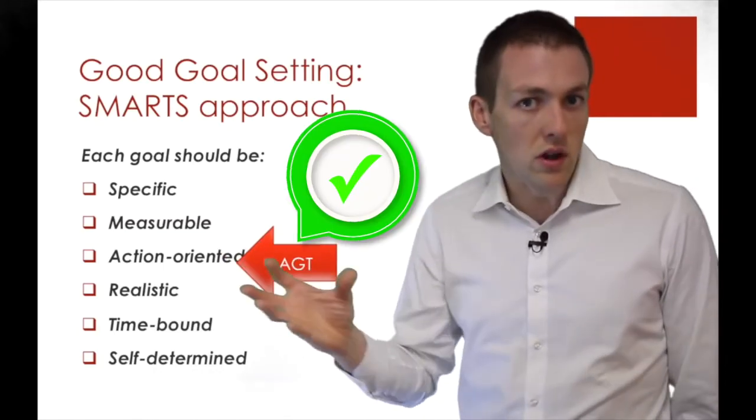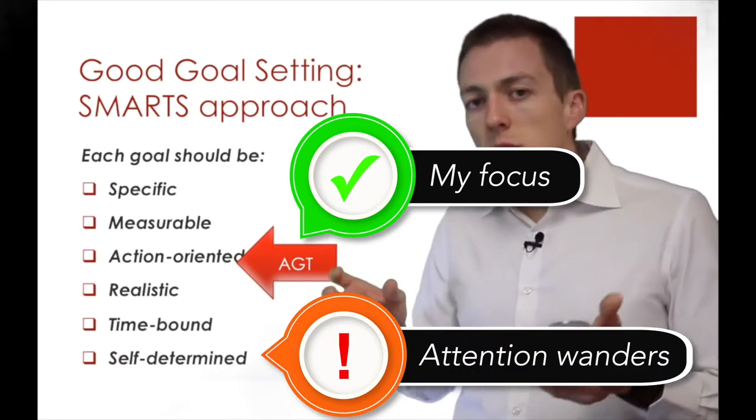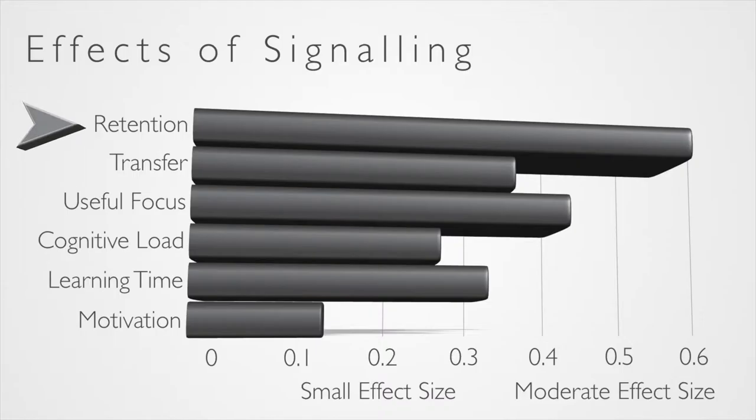The only problem is that when text gets shown on screen, students automatically try to read it. So while I'm speaking about this point up here, their attention can wander down here. Remember that our brains aren't good at taking in conflicting information through our two channels. When what they're reading doesn't match what they're hearing, learning can stop.